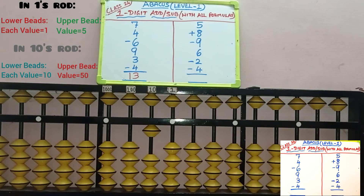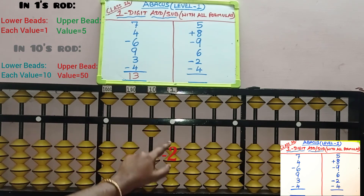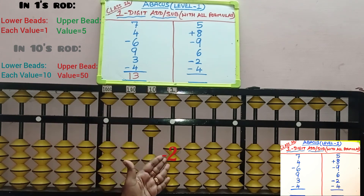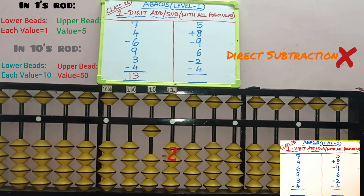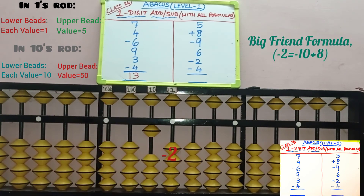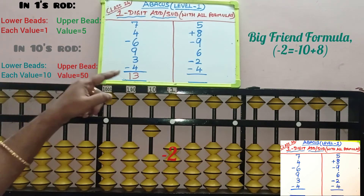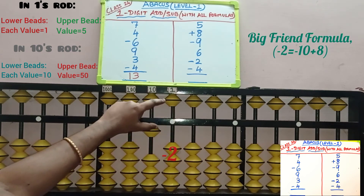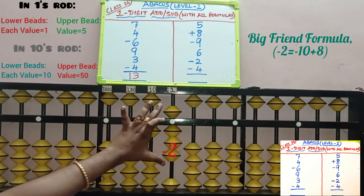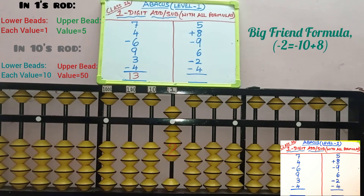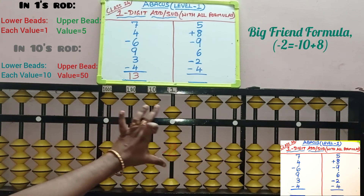Fifth row, minus 2 — we need to remove 2 beads in the 1 slot. No beads are available to remove; the 1 slot is at the 0 line. Direct subtraction is not possible. Small friend is also not possible because 5 beads are not available to remove. Apply big friend: 2's big friend is 8. In minus 2, add the friend of 2 — do plus 8 in the 1 slot. While adding the friend, remove the boss in the 10's place: minus 10. 2 beads are removed with minus 10 plus 8.